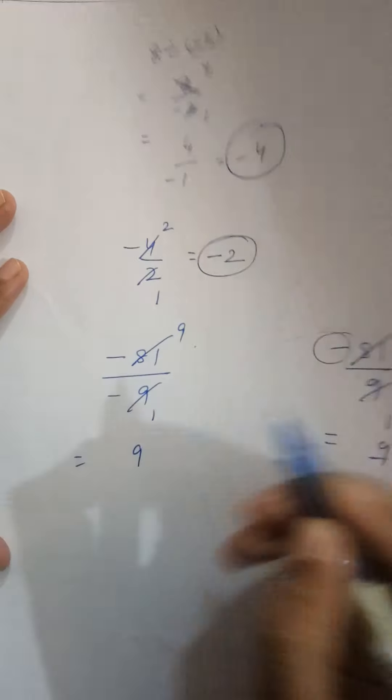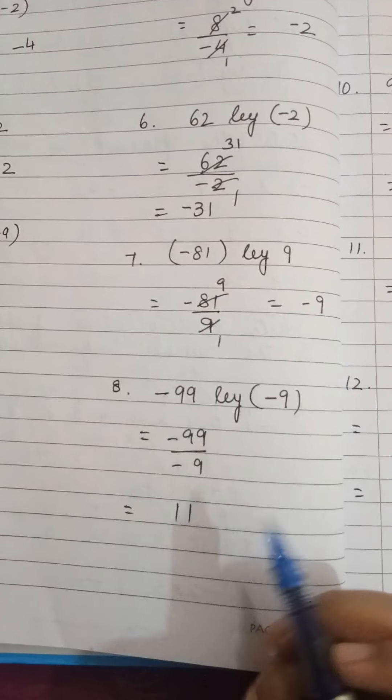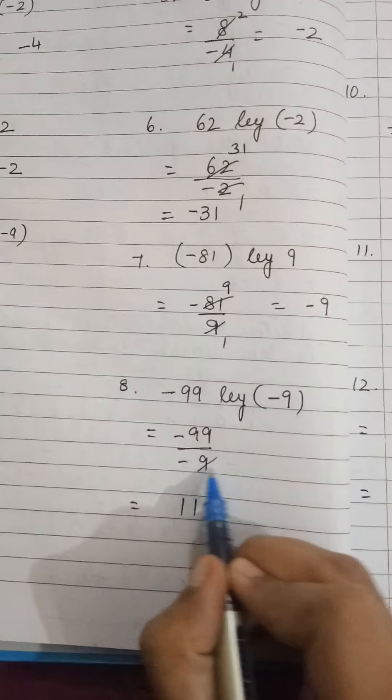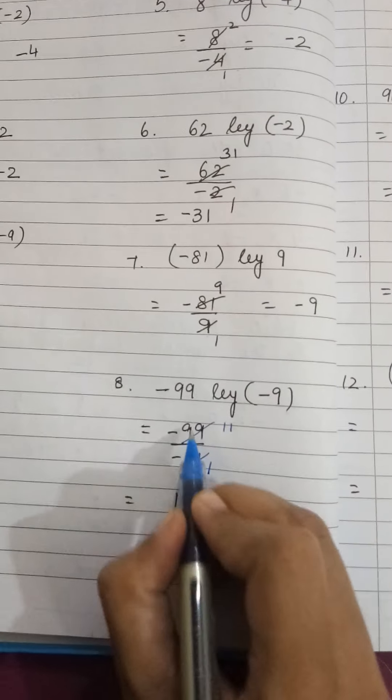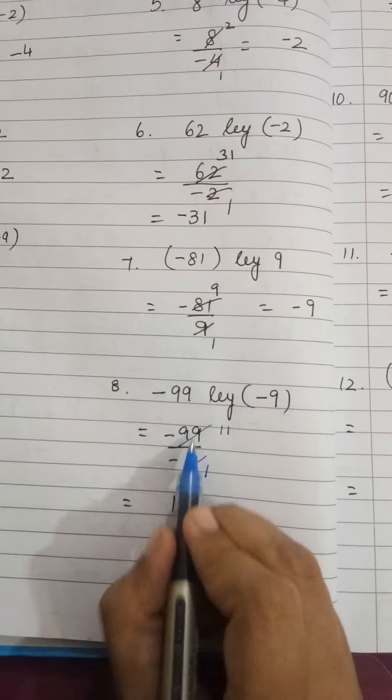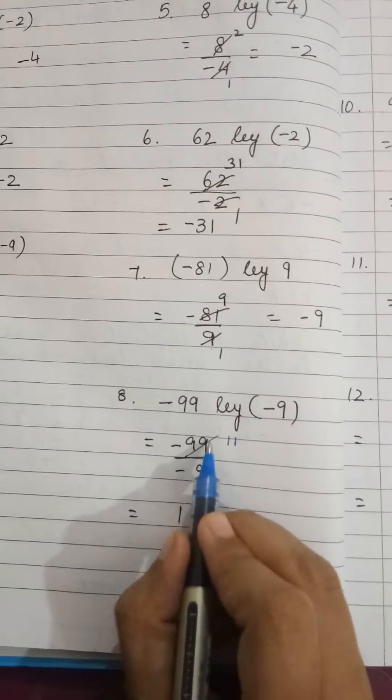Now let's move to the 8th one: minus 99 you have to divide by minus 9. 9 elevens are 99. When I divide these two on the table of 9, I will be getting 11 and minus minus will be plus.